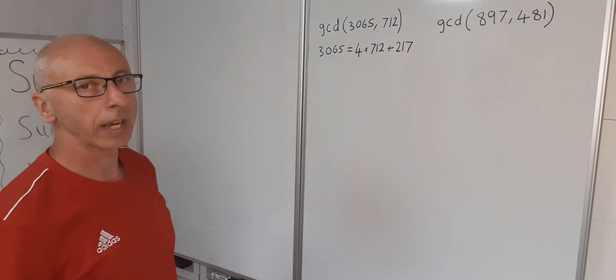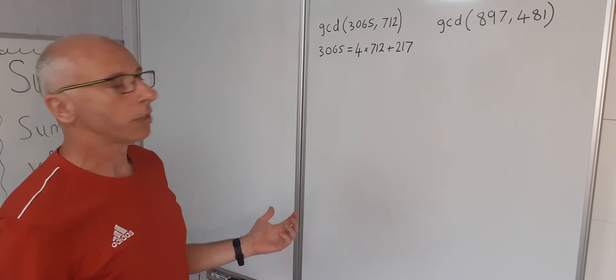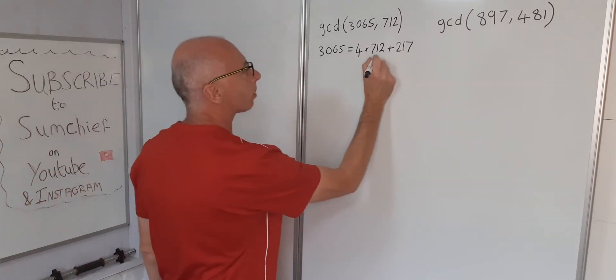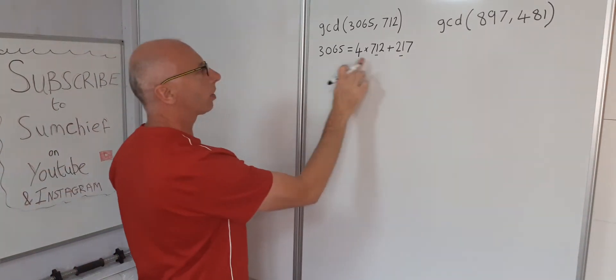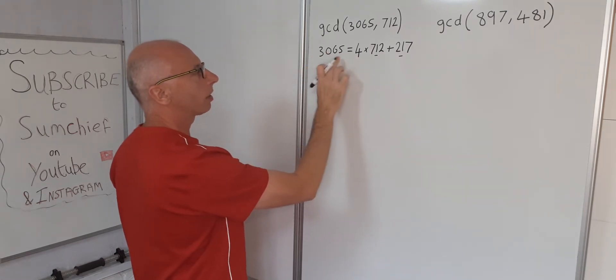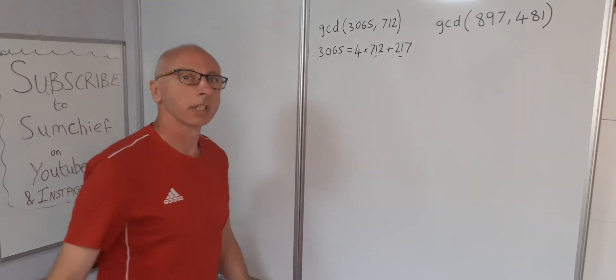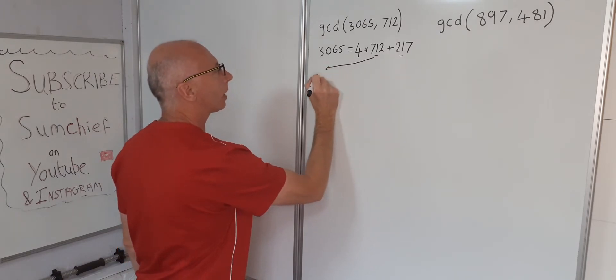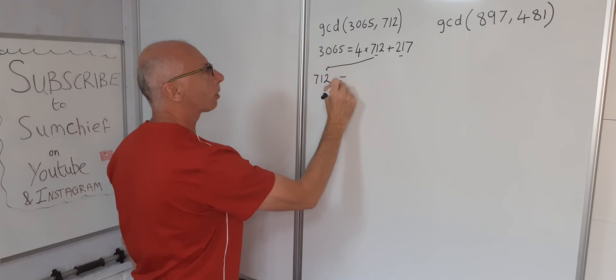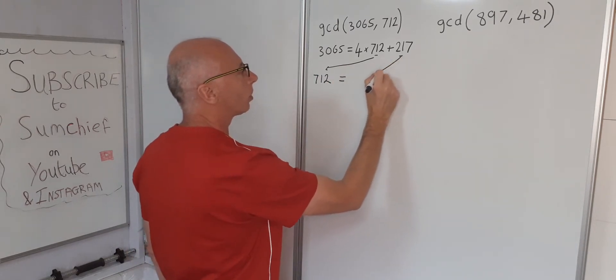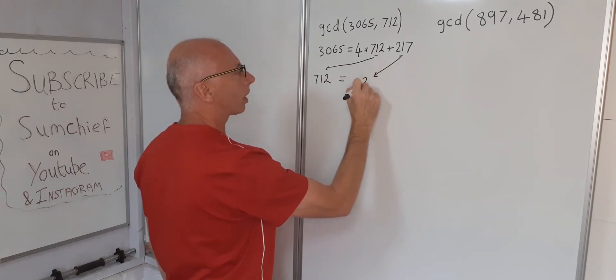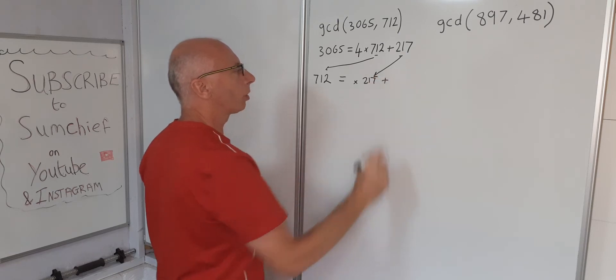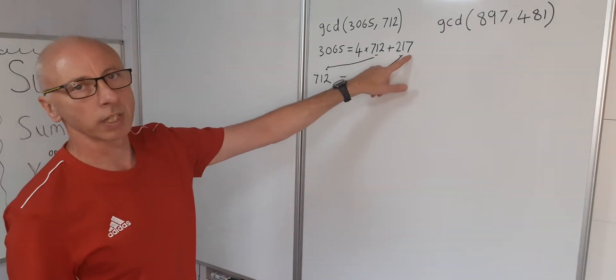Okay, so now what do we do? The system now is we take these two numbers and carry on down on the next line with a similar method. So 712 we now put here and let that equal something times 217 plus a remainder.